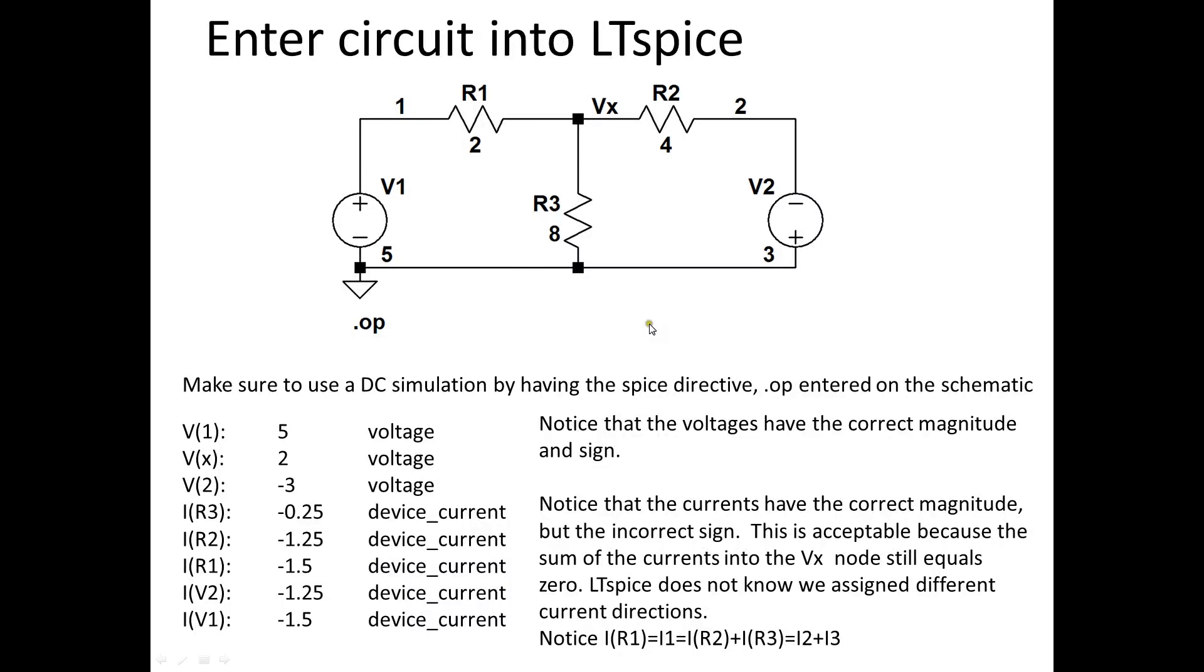So it's always nice to have another way to check your work. So I've entered this circuit into LTSpice. Make sure ground is here. V1 negative to positive on node 1, and node 2 is positive to negative. I have the resistances and these net names. And I just run the simulation and I get 5 volts on node 1, Vx is 2, and V at node 2 is minus 3, just like I had predicted.